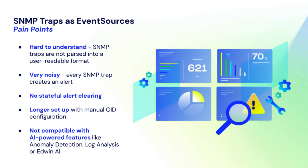There's also quite a bit less configuration for the logs version of traps than the event source version. The event source version effectively requires that you punch in every OID. With logs, we basically translate and ingest anything you throw at the collector as long as we can.